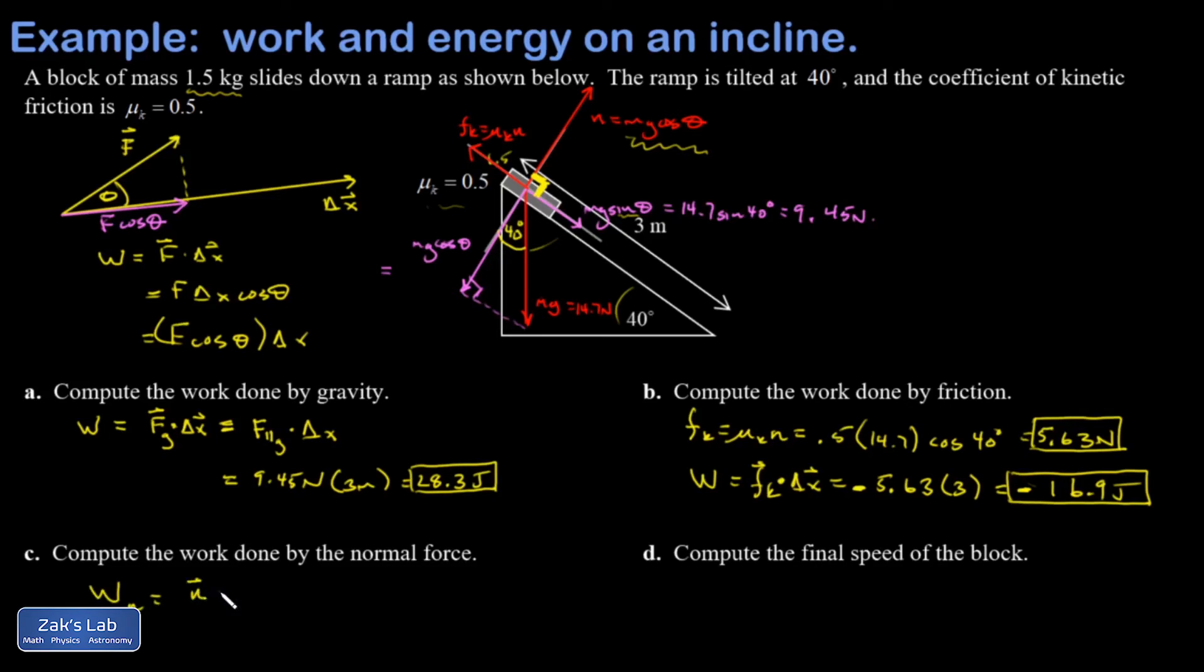What's the work done by the normal force? You would take a dot product, normal force and displacement. And that's the product of their magnitudes, cosine of the angle between those two vectors, but the angle is 90 degrees and the cosine of that is zero. So the normal force can't do any work in this case.